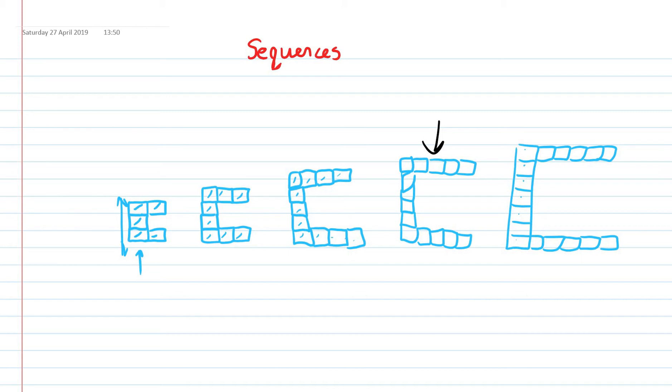Let's make a list of numbers out of this. So how many numbers are in the first one? 1, 2, 3, 4, 5. Then there's 1, 2, 3, 4, 5, 6, 7, 8. 1, 2, 3, 4, 5, 6, 7, 8, 9, 10, 11.